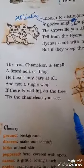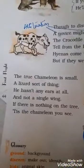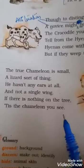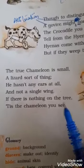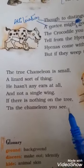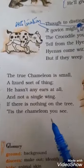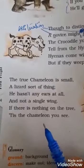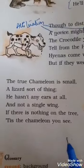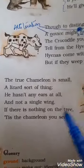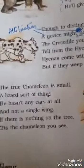Camouflaging means to blend into any environment, so it becomes almost impossible to spot a chameleon. When you find a chameleon with great difficulty on a tree because of its camouflaging nature — 'it is the chameleon you see' — that means you will realize which animal it is. This is how you can identify this creature, the chameleon.